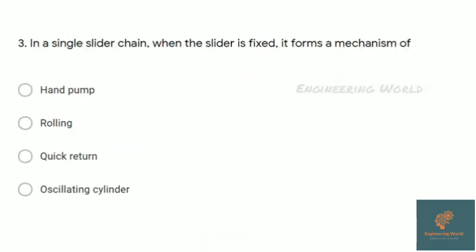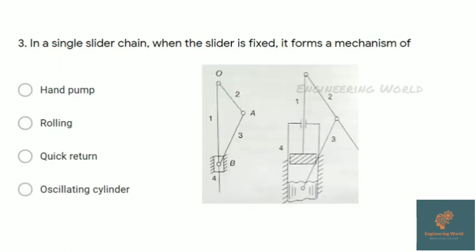The next question: in a single slider chain, when the slider is fixed, it forms some mechanism. Here is a diagram where slider 4 is fixed. This plunger will do up and down motion, and this mechanism is used in a hand pump. So the correct answer is hand pump.